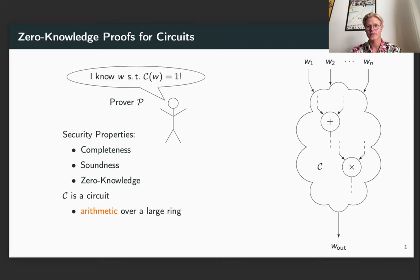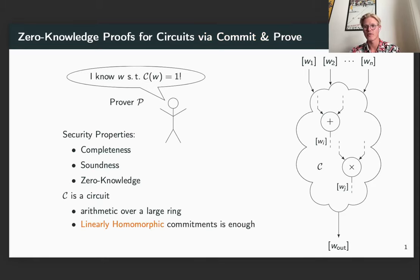We always consider the circuit as arithmetic over a large ring, and we achieve zero knowledge by using the Commit and Prove paradigm, where the prover commits to the entire witness, and then finally you open the output value to show that it's accept or reject. This can be done using only linearly homomorphic commitments, provided the prover proves consistency of the commitments throughout the computations.